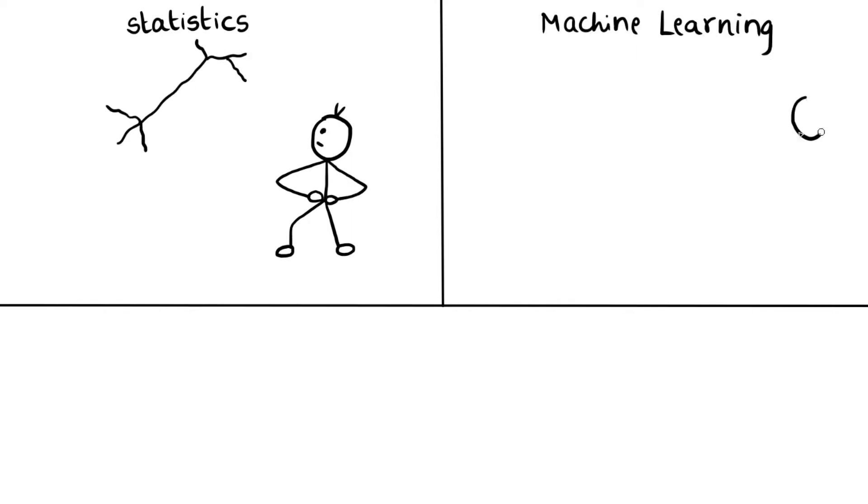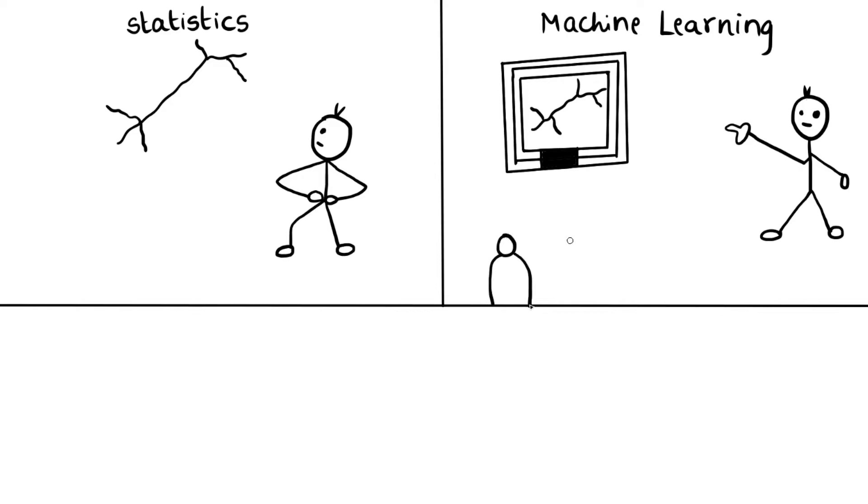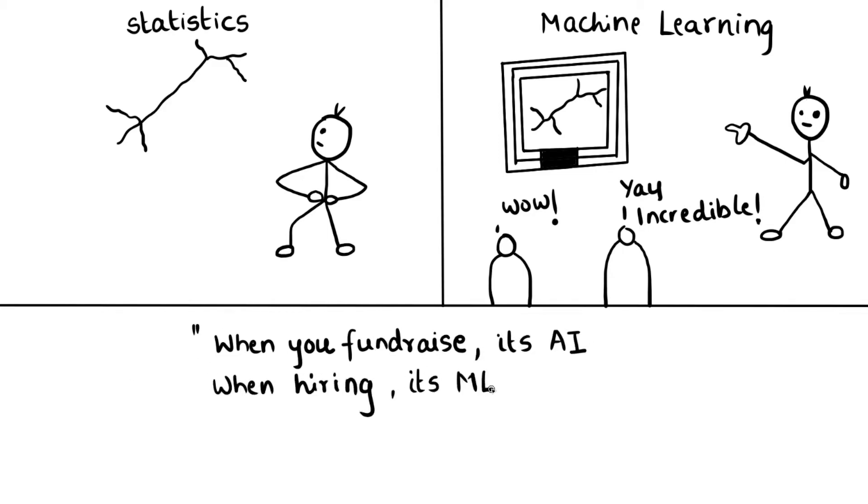Machine learning relies heavily on statistics, to such an extent that it has been exaggerated that machine learning is really nothing more than statistics simply repackaged or reframed to make it look more appealing to consumers. This has resulted in people saying things like: when you're fundraising it's AI, when you're hiring it's ML, but when you're implementing it's